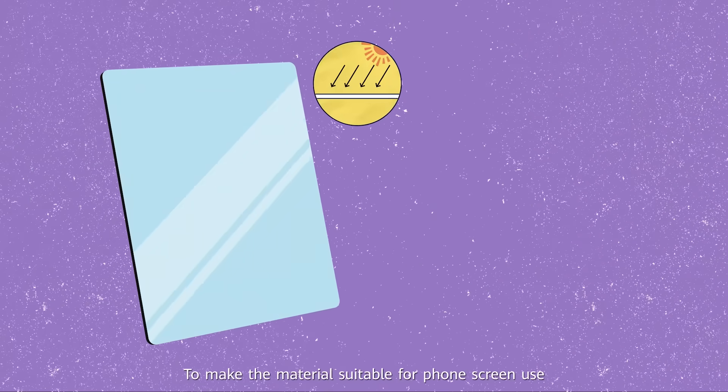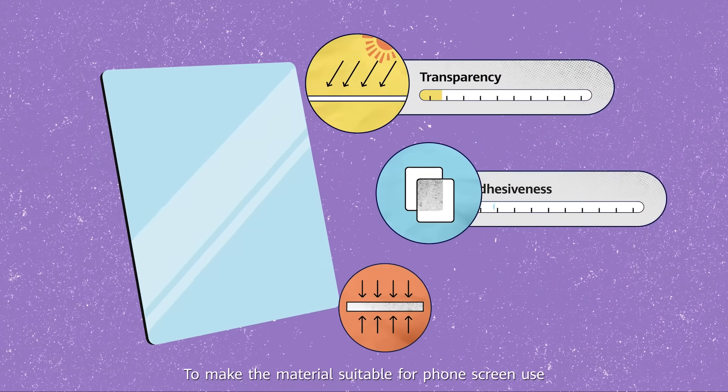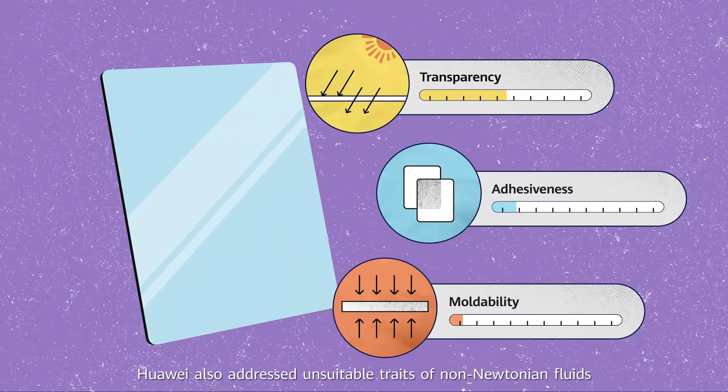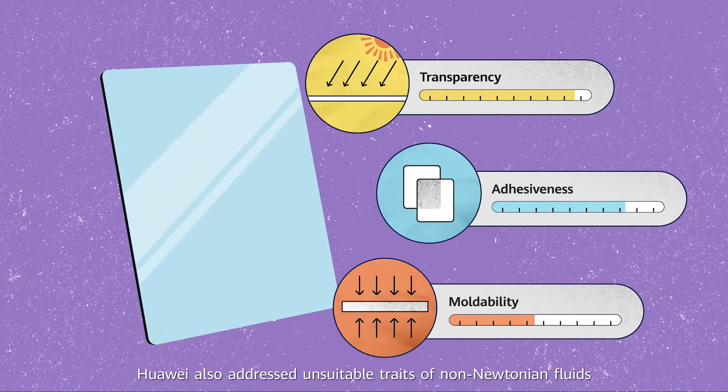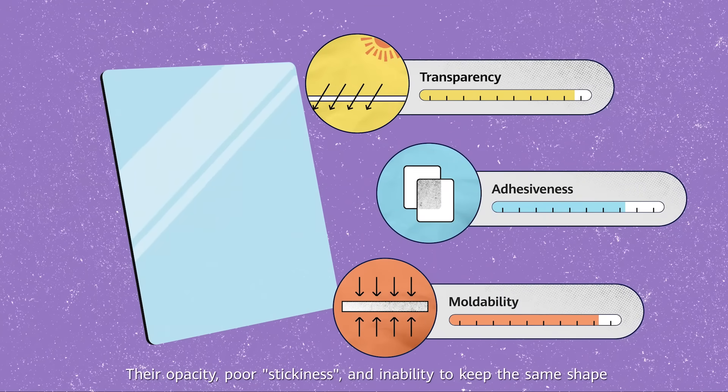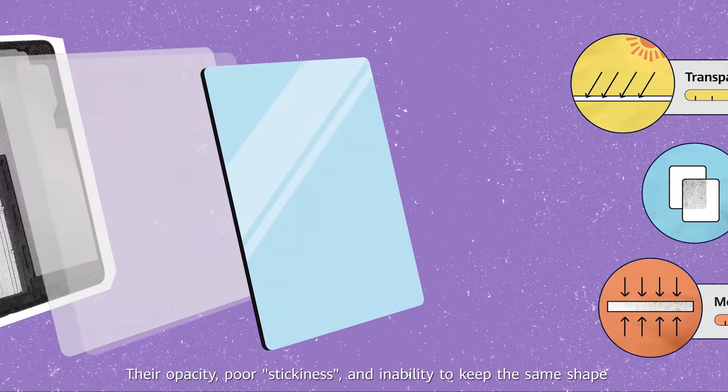This is not all. To make the material suitable for phone screen use, Huawei also addressed unsuitable traits of non-Newtonian fluids: their opacity, poor stickiness, and inability to keep the same shape.